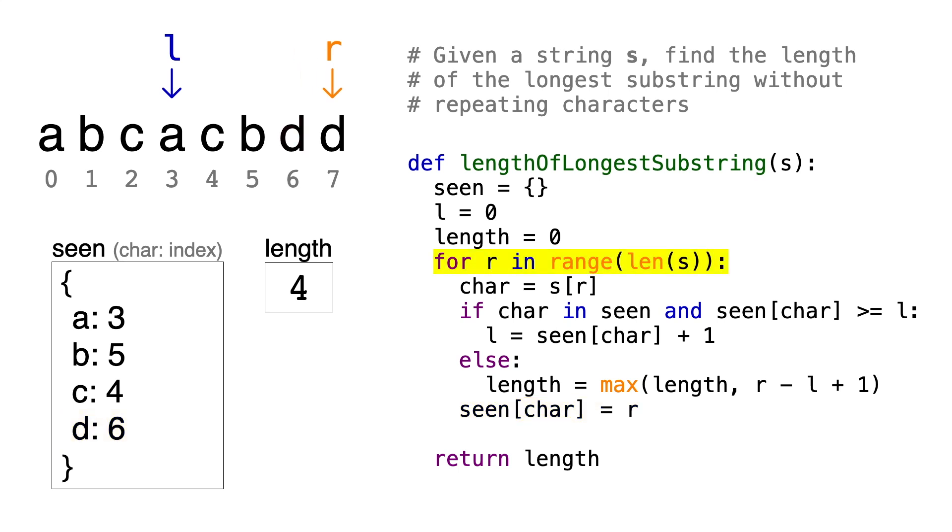For the last iteration, we come across D again, which is obviously repeated, so we'll move the left pointer to index 6 plus 1, so 7. That was the last iteration, so we can just return length and we're done.